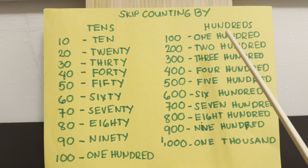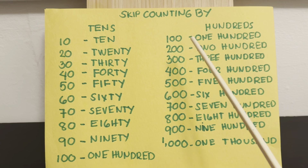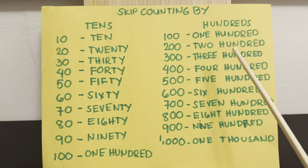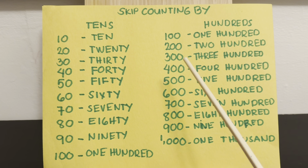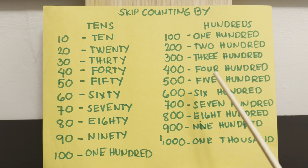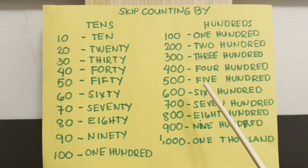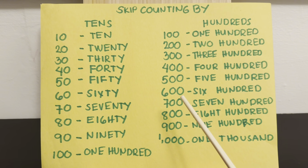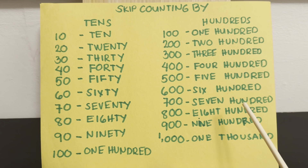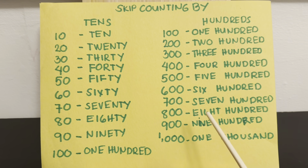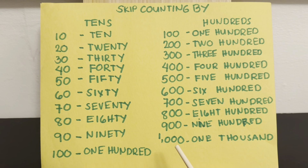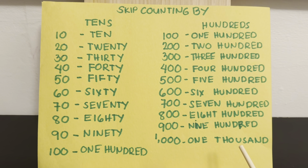Next, let's keep counting by hundreds. 100, 200, 300, 400, 500, 600, 700, 800, 900, 1000.